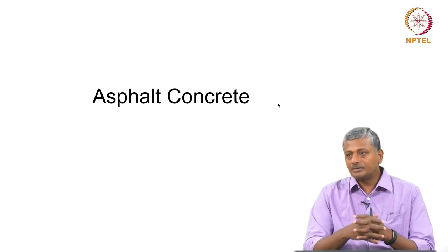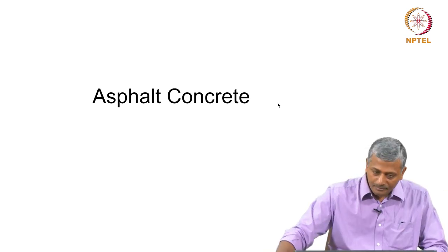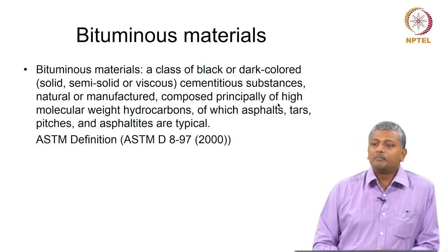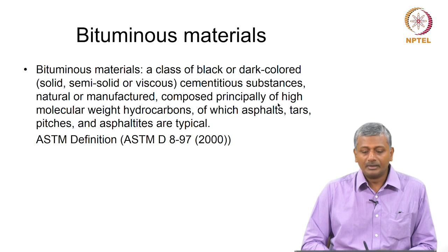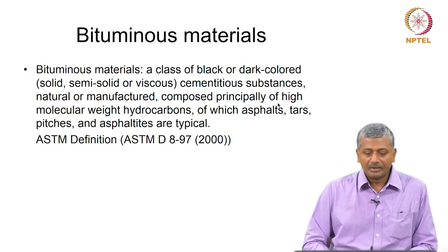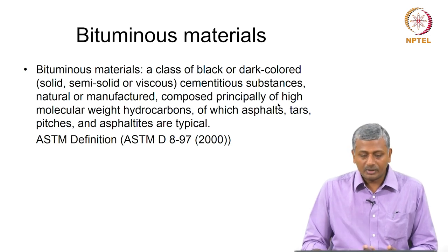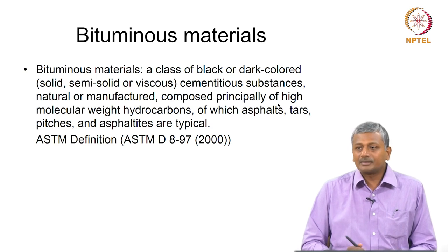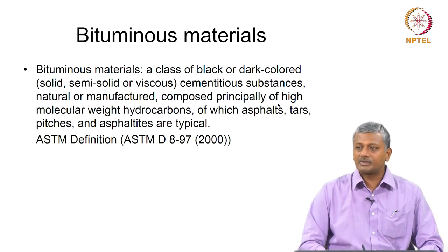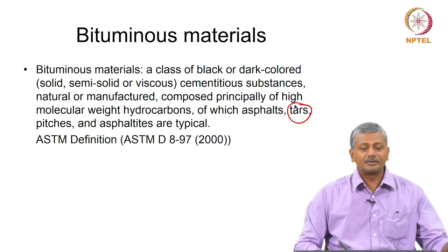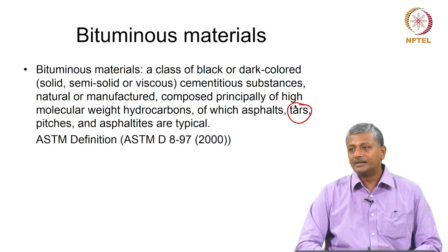The difference also lies in how loads are taken by cement concrete versus asphalt concrete. Asphalt belongs to a class of materials called bituminous materials. The ASTM definition states that bituminous materials are black or dark-colored cementitious substances, natural or manufactured, composed principally of high molecular weight hydrocarbons. The most common bituminous materials are asphalt, tar, pitch, and asphaltite. While people colloquially say roads are made with tar, civil engineers know that it is asphalt or bitumen that actually goes into pavement construction.